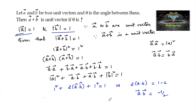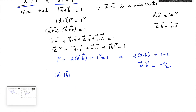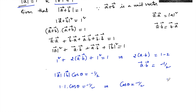The dot product can be written as mod a times mod b times cos theta, where theta is the angle between the two vectors. So mod a times mod b times cos theta equals negative 1 by 2. Since mod a equals 1 and mod b equals 1, this gives cos theta equals negative 1 by 2. Since cosine is negative in the second quadrant, theta is an obtuse angle.